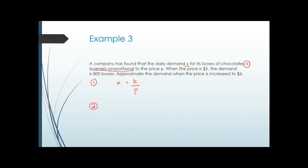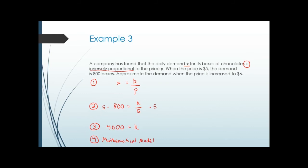Step two: plug in the given values. When price is $5, that's p equals 5, and demand is 800 boxes, so x equals 800. That gives 800 equals k over 5. Step three: multiply both sides by 5 to solve for k. Five times 800 gives 4000, so k equals 4000. Step four, our mathematical model: x equals 4000 over p.